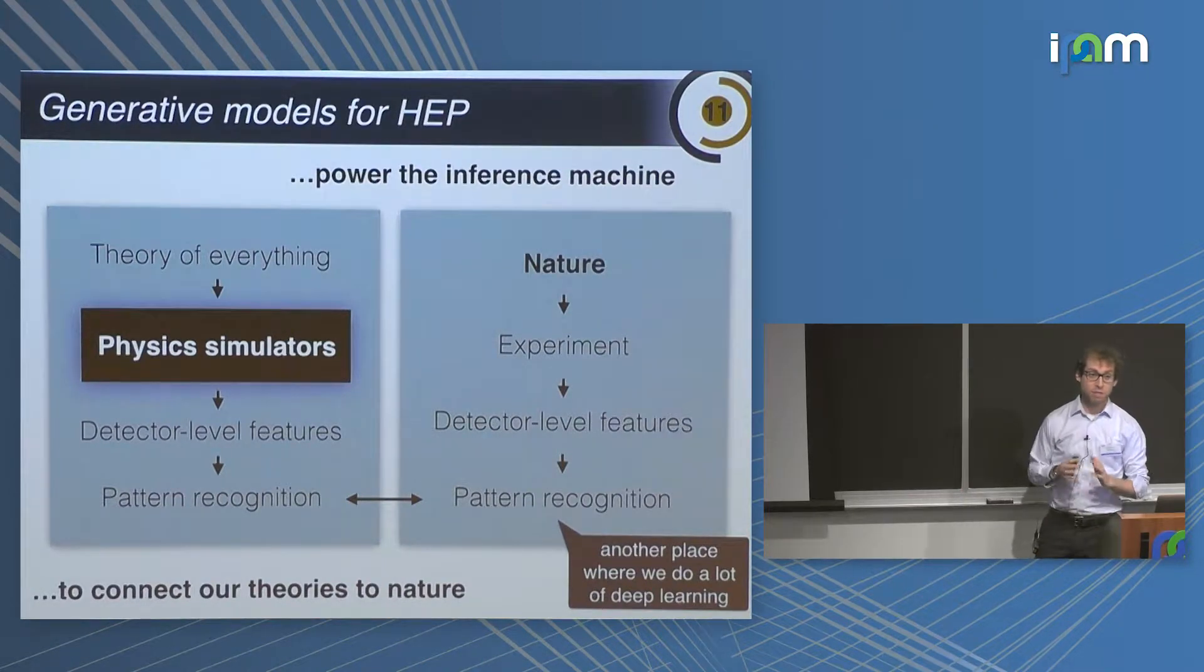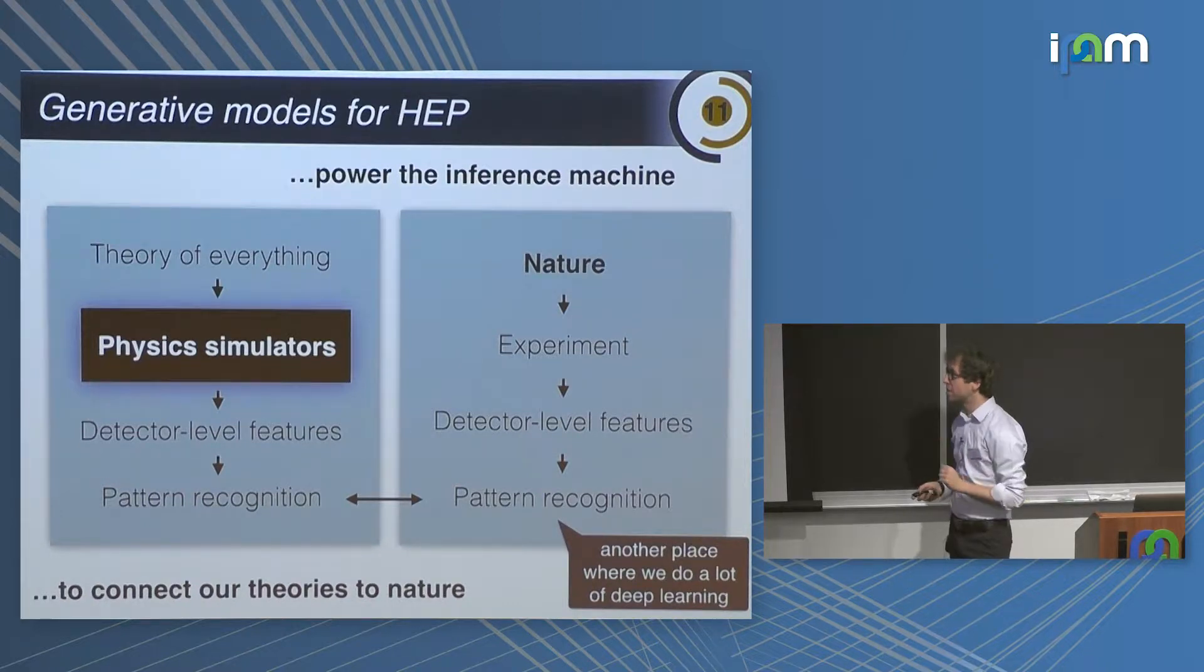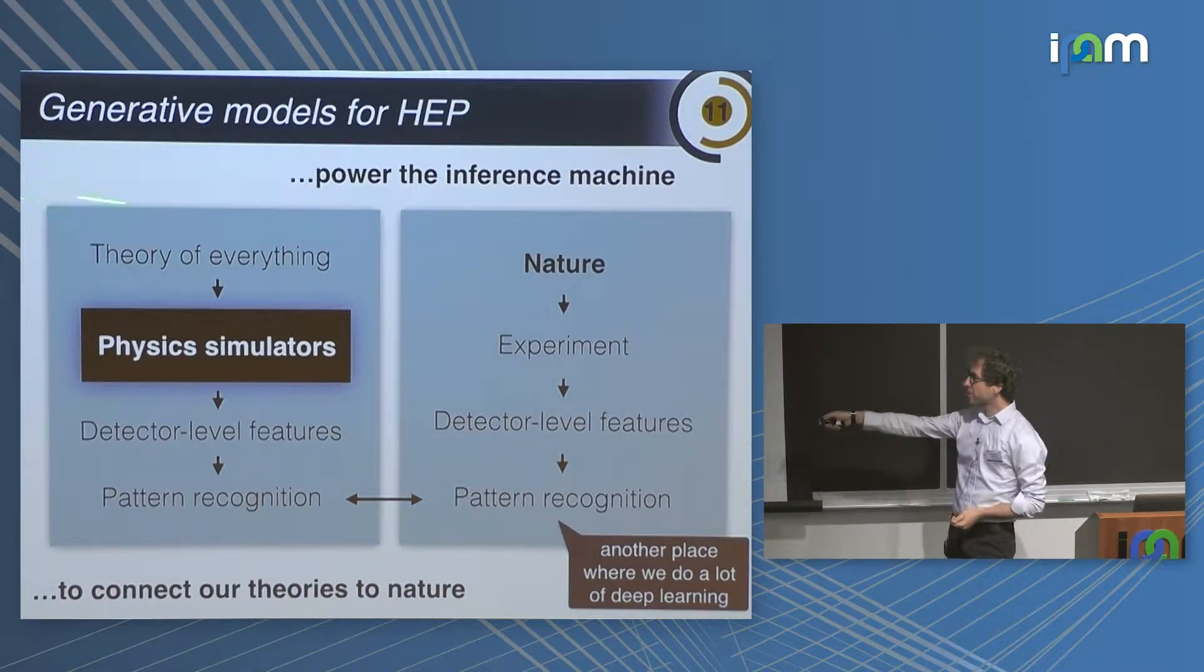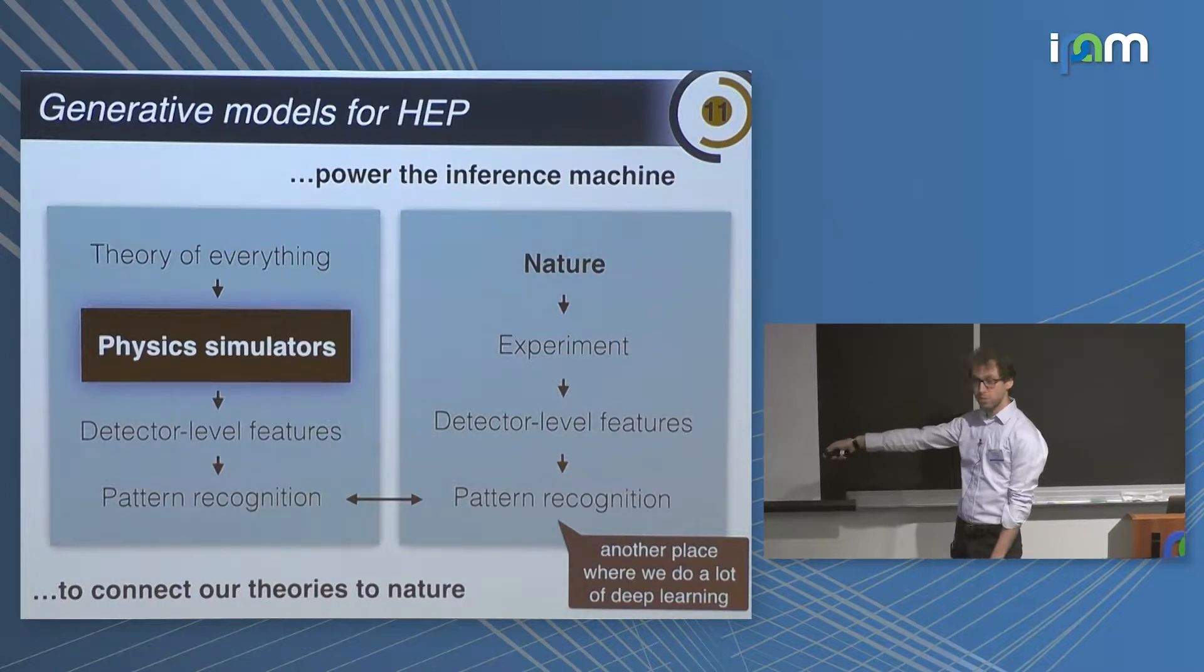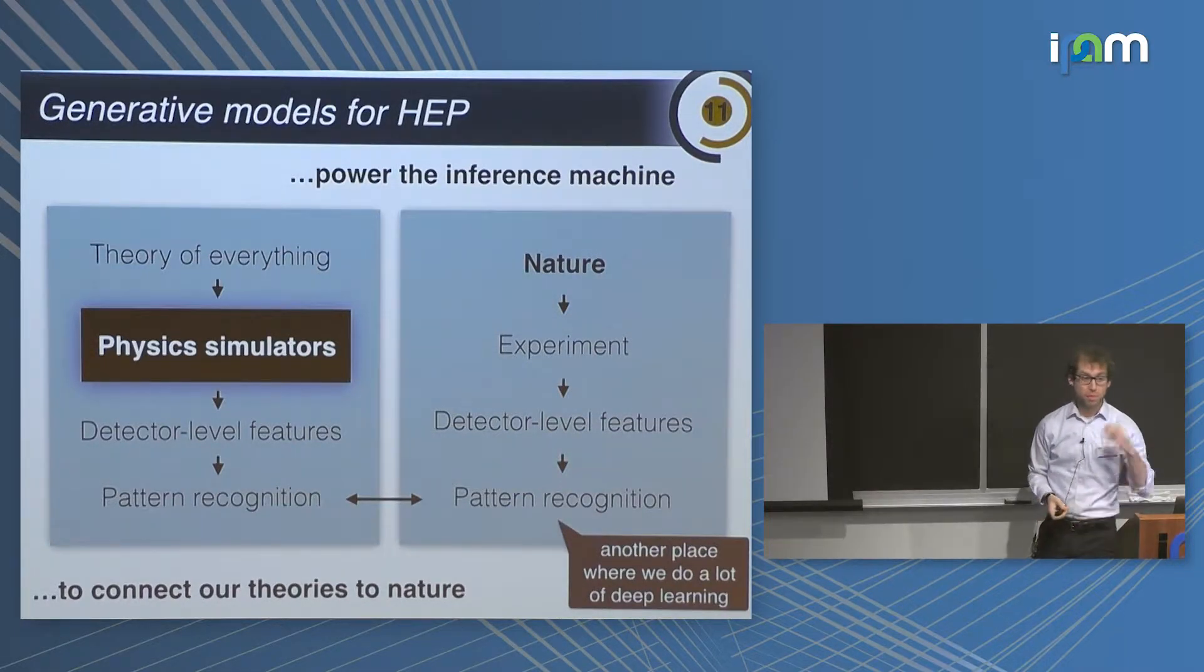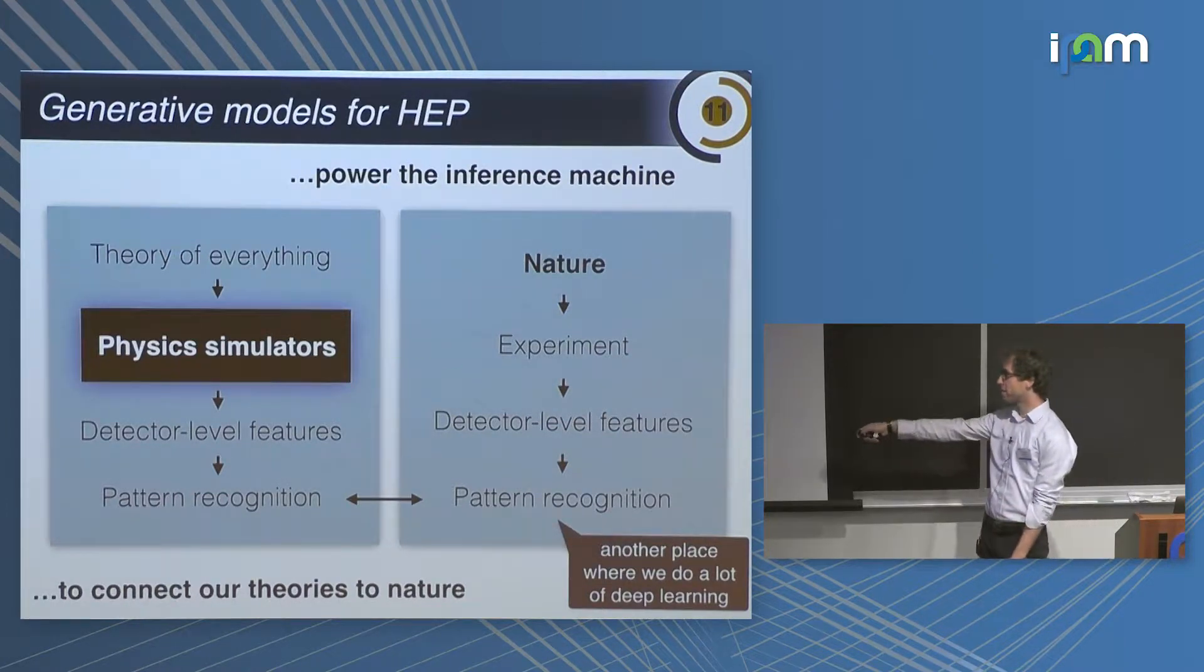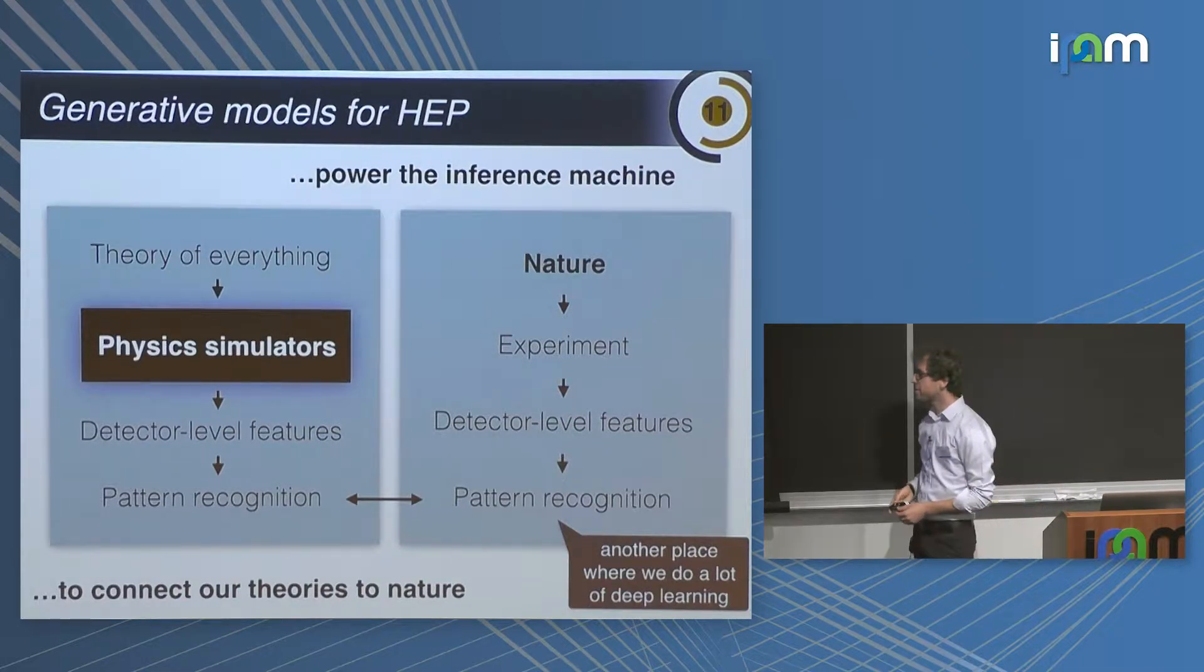So generative modeling is essential in high-energy physics. We have the benefit that, as a very mature field, we have basically a theory of everything. But in order to connect the theory of everything with the objects we see in our detector, we need this black box here, which is physics simulators. The physics simulators connect our fundamental theory to what we can observe in the detector, and of course we like to compare our simulated version with the real version from nature.